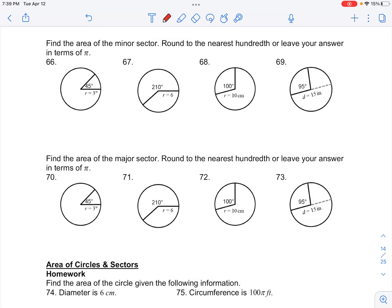Number 69 in your classwork for area of circles and sectors: we want to find the area of the minor sector, which is the sector given by the 95-degree measure.